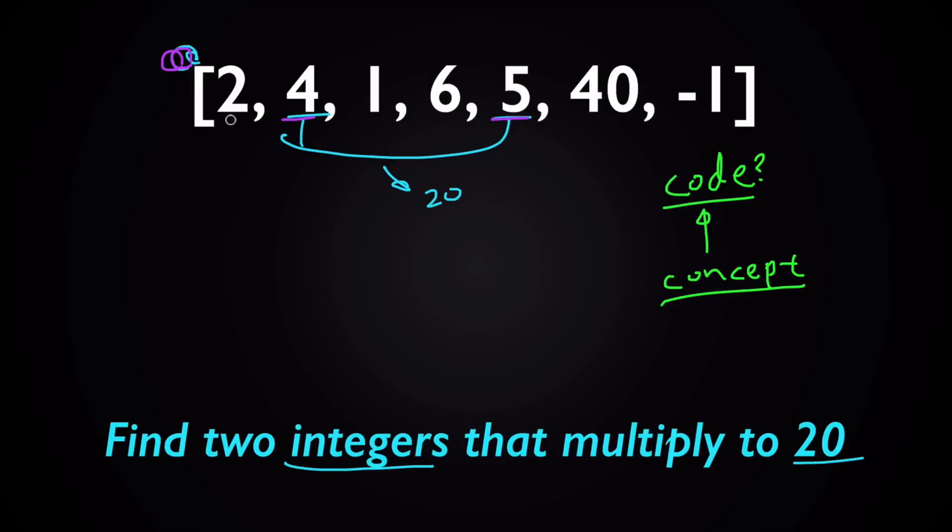Then you might say, for example, well, I can look at each item and ask myself, for example, for two at the top, is there number 10 in this array? So check these numbers one by one and check if any of them is 10, and the answer is no.